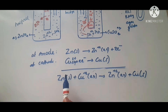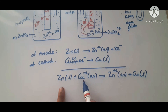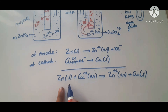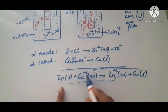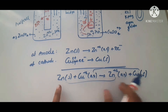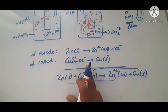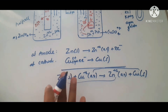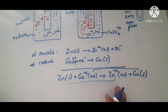The overall net reaction is: Zn(s) + Cu²⁺(aq) → Zn²⁺(aq) + Cu(s). Zinc is oxidized (oxidation number goes from 0 to +2) and copper is reduced. This transfer of electrons — two electrons lost and two electrons gained — produces electricity. That's how chemical energy is converted to electrical energy in the Daniel cell.